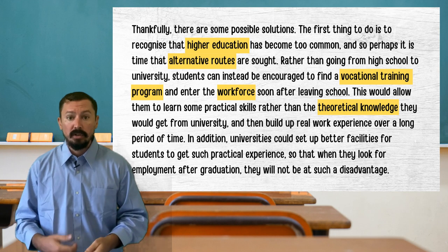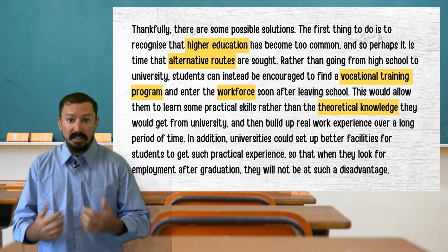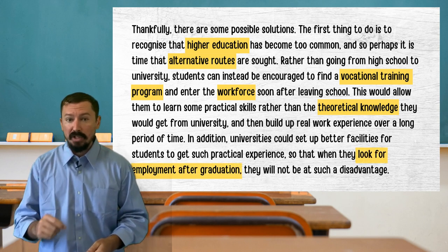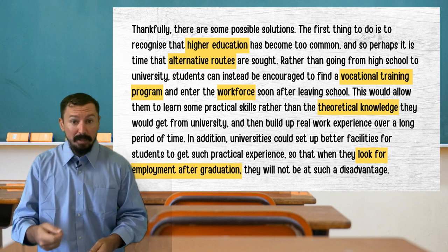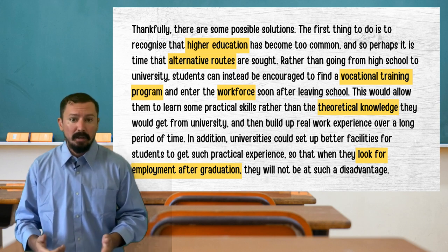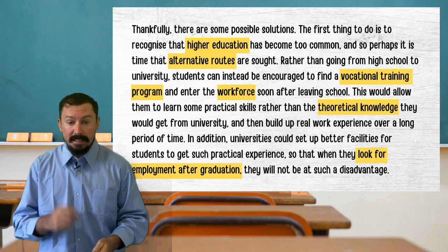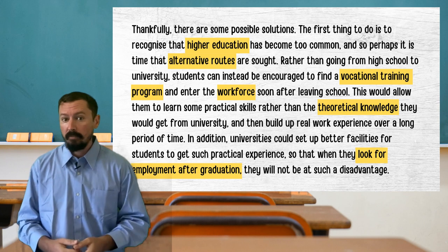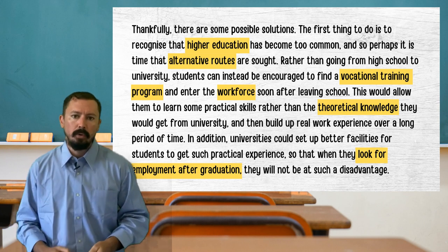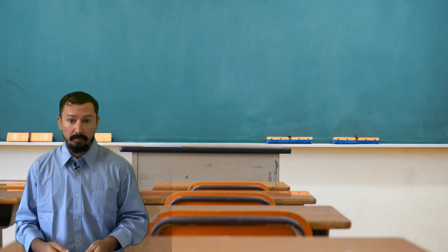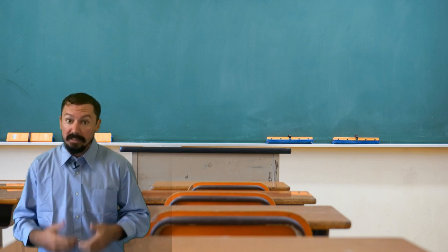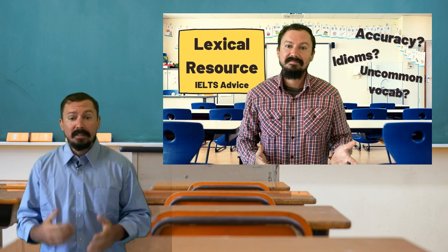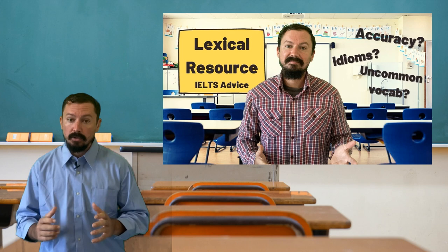Importantly, my words are collocated correctly — that means they go together in natural ways. When I say 'look for employment after graduation,' it might seem easy to you. You might be surprised this is in a band 9 essay, but a lot of IELTS candidates would write 'seek for employment' or misuse the noun 'job seeker' by forcing it into a verb form. I cannot stress enough the importance of accuracy here. If you want to learn more about lexical resource — and I think everyone should — then check out my video on it. This is a deep dive into a profoundly misunderstood subject.